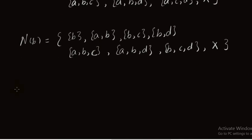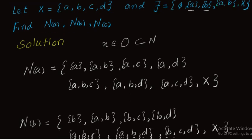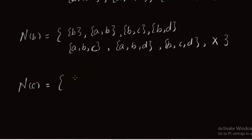Now we find the neighborhood system of point C. First we find the smallest open set containing C. Here, the smallest open set containing C is the ground set X itself — no other open set contains point C. Since X is the largest set, there is no superset of X. So the neighborhood system of point C is just {X}.